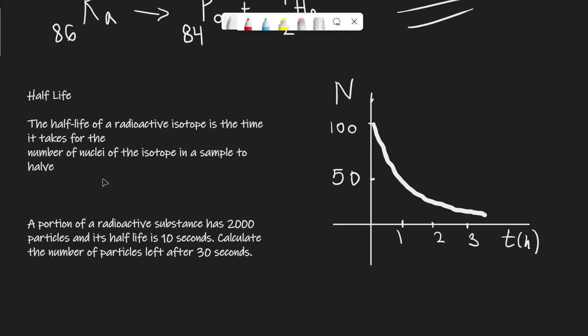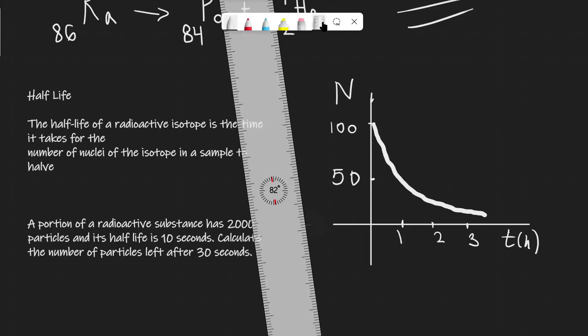Okay, so on to half-life next. The half-life of radioactive isotope is the time it takes for the number of nuclei in the sample to half. We can find this from a graph pretty easily if we have the number of particles and then we have time on the x-axis. The graph will typically go down like this.